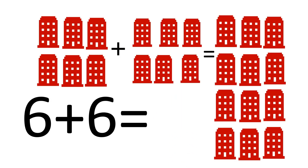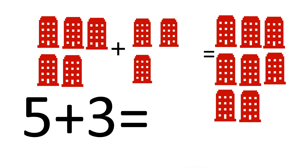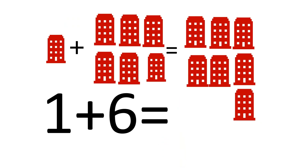How many buildings are there? 5 plus 3 is equal to 8. How many buildings are there? 5 plus 3 is equal to 8.